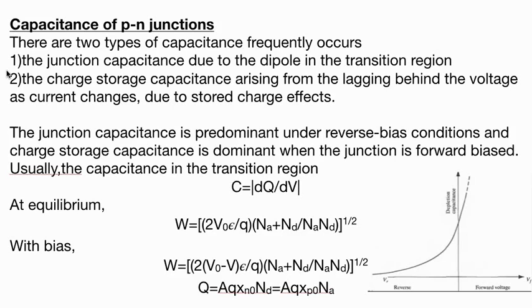In reverse bias condition, the junction capacitance is predominant in reverse bias, and storage charge is dominant under junction forward bias. At equilibrium W, we know that V_naught is 1/2 Q/ε * N_A*N_D/(N_A + N_D) into W squared.